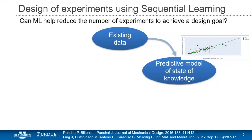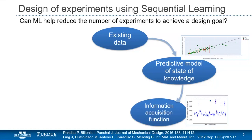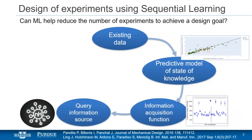Once you have that model with quantified uncertainties, you can ask: out of all the next experiments I could run, which one is expected to give me the most bang per buck? For the next experiment, which is the one I'll learn the most from? There's what's called an information acquisition function. Depending on your goal, there are different ways to select what the next experiment is that will provide the most information. Once you decide, you go and query that information source — that could be a lab experiment or a simulation in Nanohub.